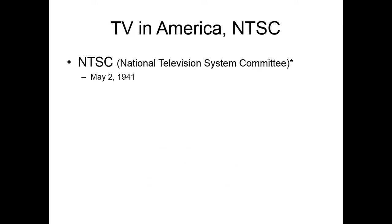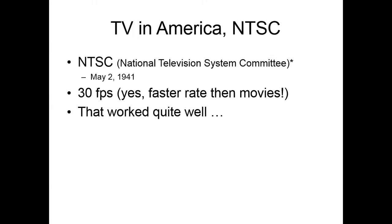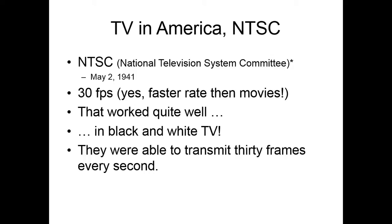Back in 1941, the NTSC, the National Television System Committee, got its standards approved by the FCC to broadcast 30 frames per second. That's right, faster rate than the movies. That worked quite well in black and white TV. They were able to transmit 30 frames every second, no problem.